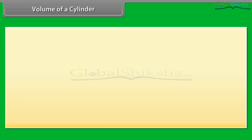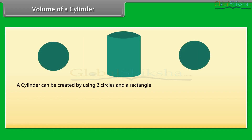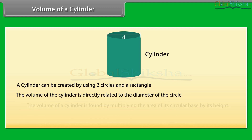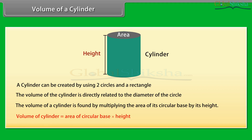Volume of a cylinder. A cylinder can be created by using two circles and a rectangle. The volume of the cylinder is directly related to the diameter of the circle. The volume of a cylinder is found by multiplying the area of its circular base by its height. That means volume of cylinder equals area of circular base into height.